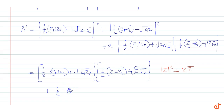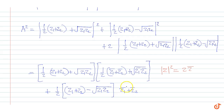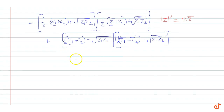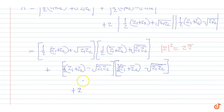Plus half into z1 plus z2 minus z1 z2 square root. The conjugate of this complex number is z1 plus z2 bar, half here. Half into z1 minus z1 z2 bar square root. Plus 2 into 1 by 4 into z1 plus z2 the whole square minus z1 z2.